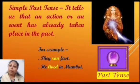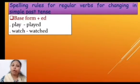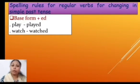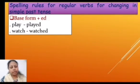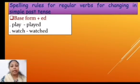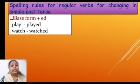Now we are going to learn some of the spelling rules for regular verbs for changing them into simple past tense. The first rule says: base form plus 'ed'. For example, 'play' — when we add 'ed' to this word it changes into its simple past tense, that is 'played'. Let us take one more example: 'watch' — when we add 'ed' to this word it changes into 'watched'.